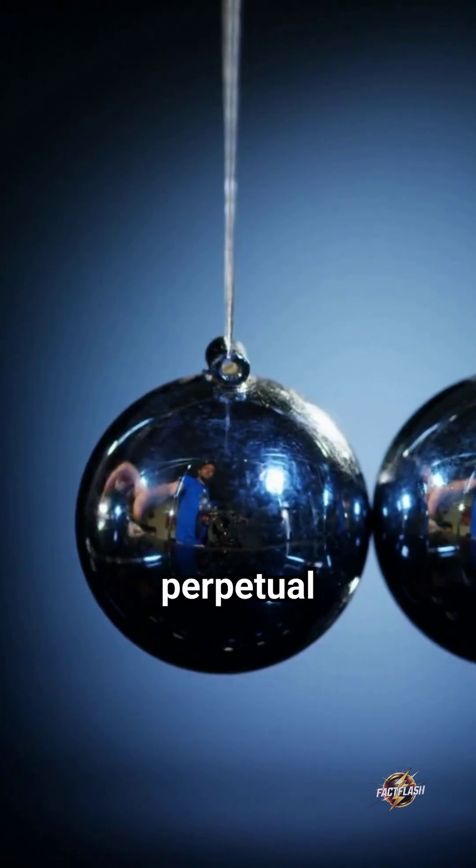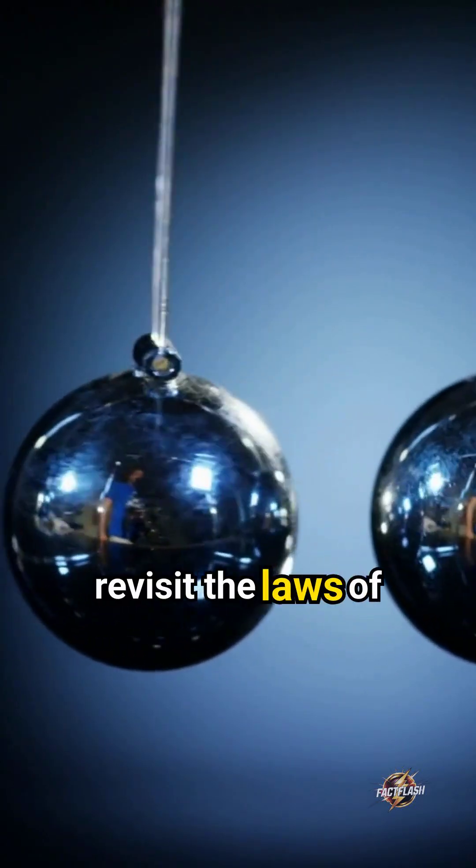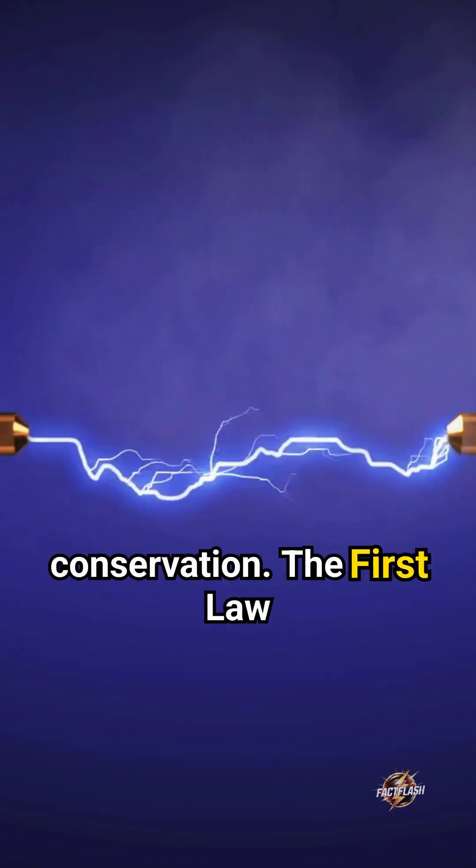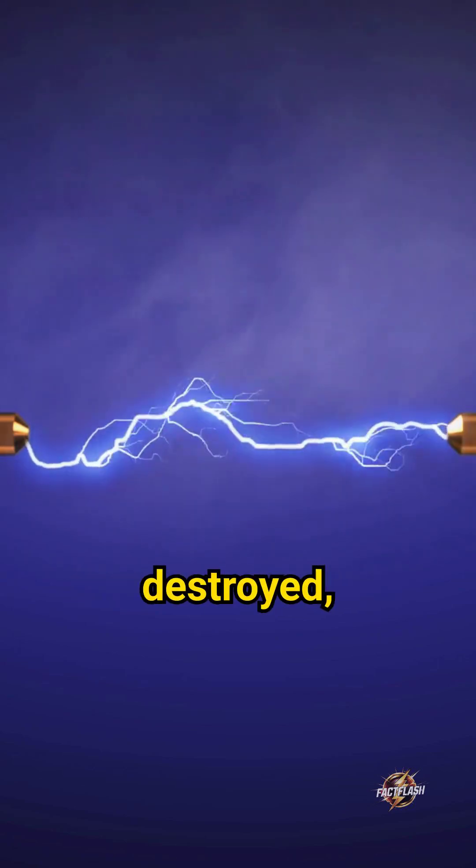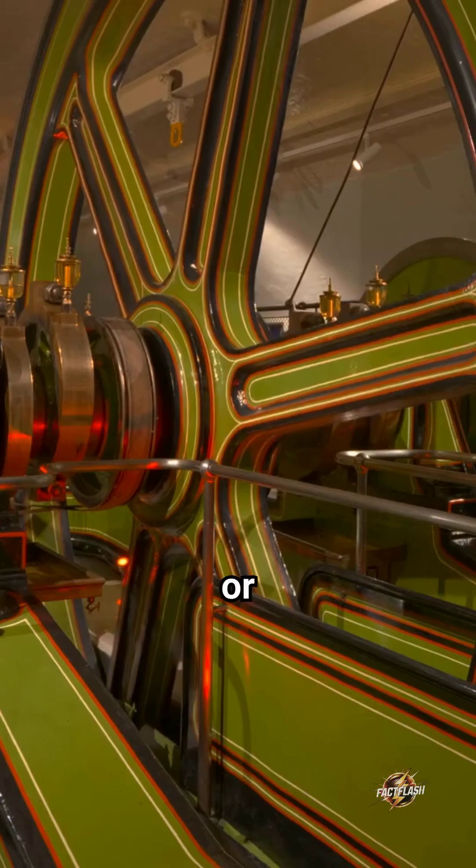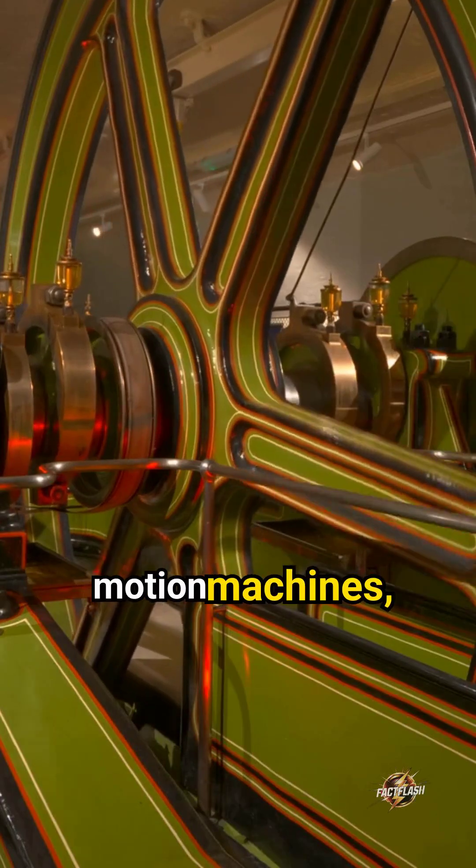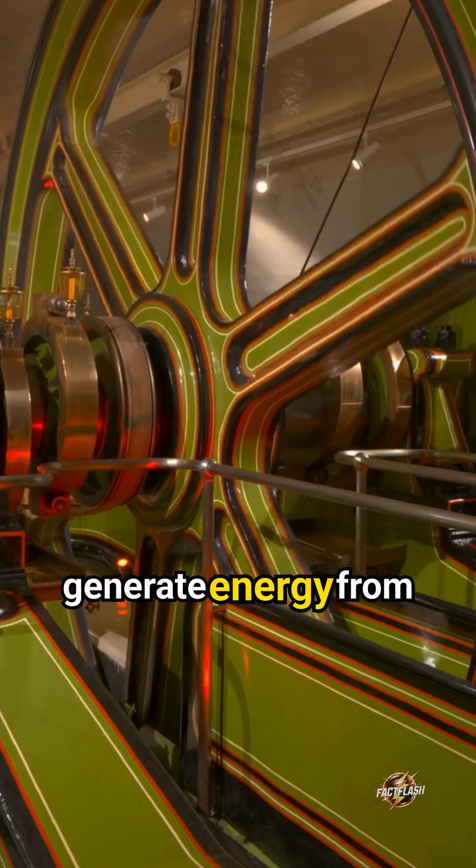To understand perpetual motion, we need to revisit the laws of energy conservation. The first law of thermodynamics states that energy cannot be created or destroyed, only transferred or transformed. Perpetual motion machines, however, claim to generate energy from nothing.